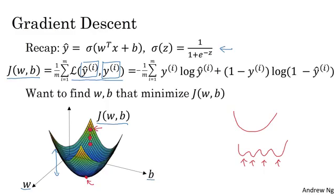What gradient descent does is it starts at that initial point and then takes a step in the steepest downhill direction. After one step of gradient descent, you might end up there. That's one iteration of gradient descent. After two iterations of gradient descent, you might step there, three iterations and so on, until eventually, hopefully you converge to this global optimum or get to something close to the global optimum.